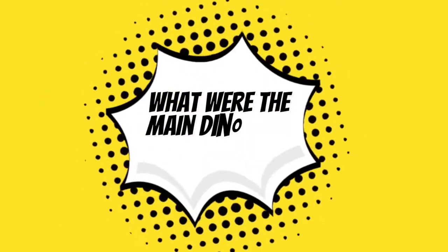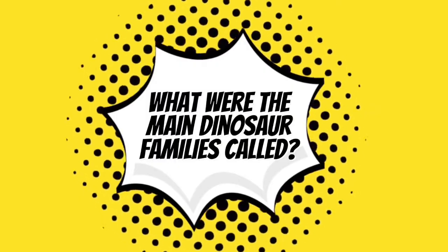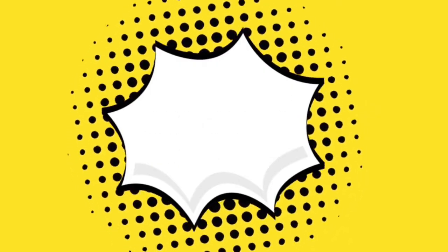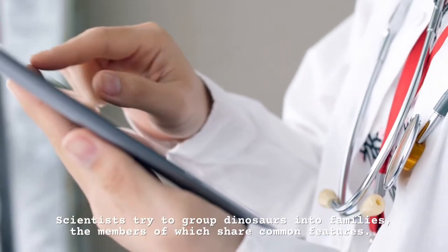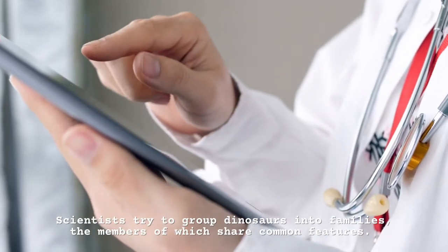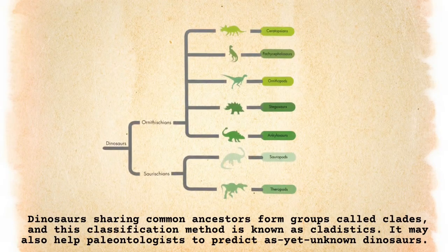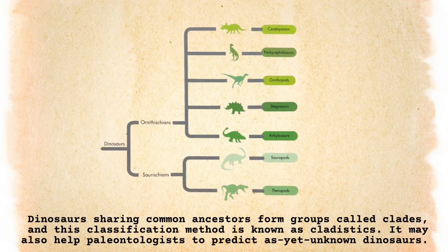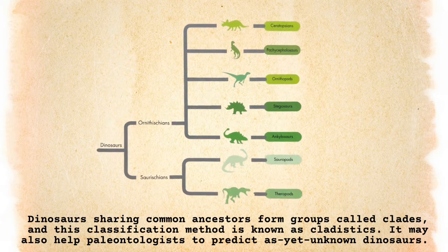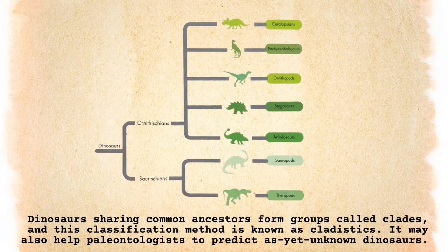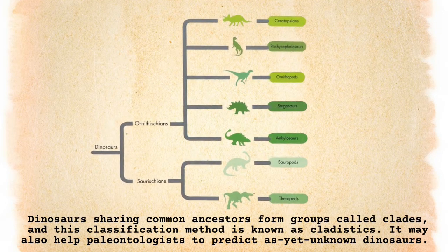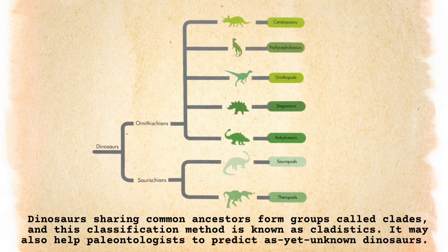What were the main dinosaur families called? Scientists try to group dinosaurs into families, the members of which share common features. Dinosaurs sharing common ancestors form groups called clades, and this classification method is known as cladistics. It may also help paleontologists to predict as yet unknown dinosaurs.